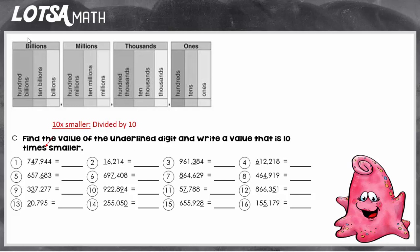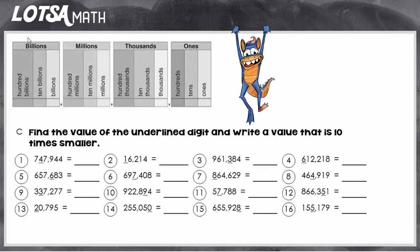However, in the same way that we've practiced before with making numbers ten times bigger, we can use that same strategy to make things ten times smaller. So we're going to find the value of the underlined digit and then write the value that's ten times smaller.